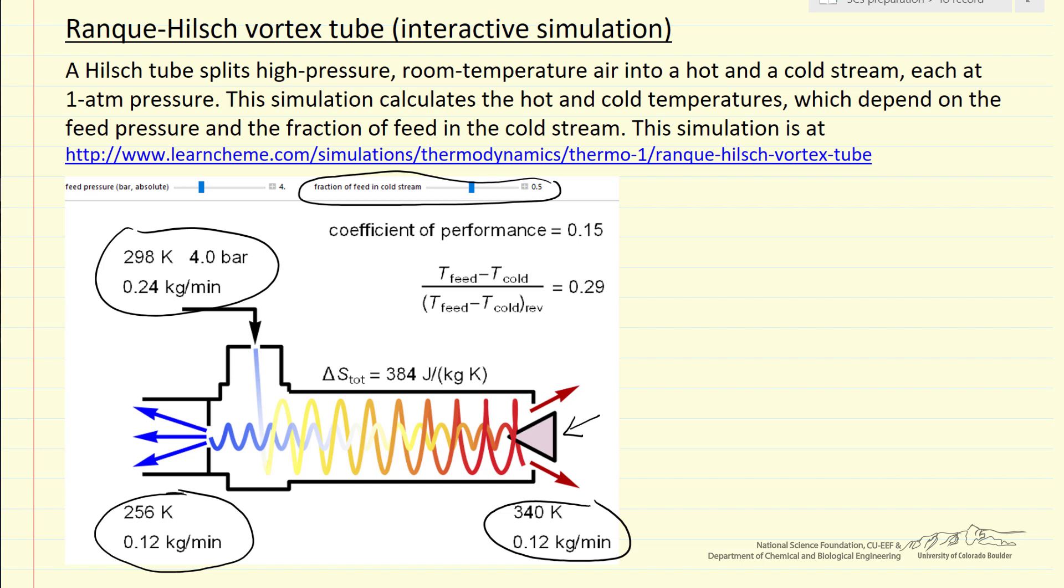So for this particular setting, you can see that half the gas, the temperature increases by 42 degrees, and half the gas, the temperature decreases by 42. So it satisfies the first law for constant heat capacity.